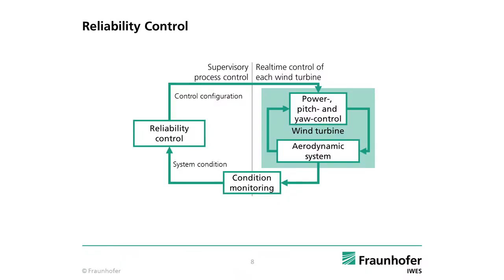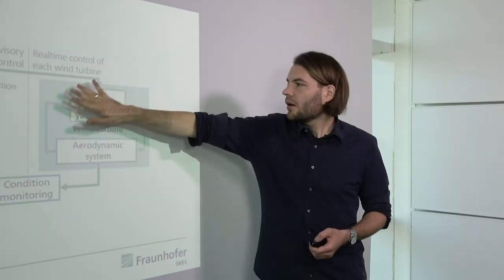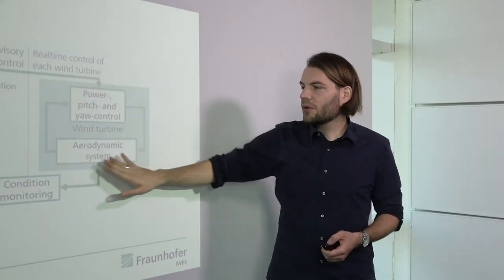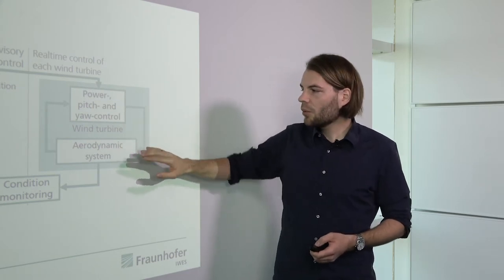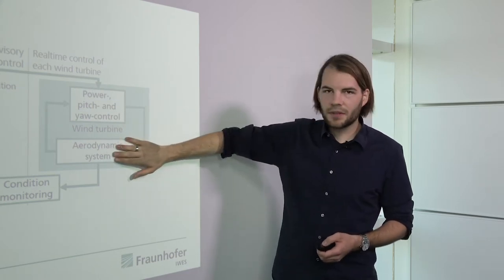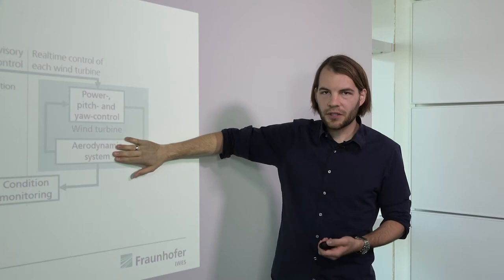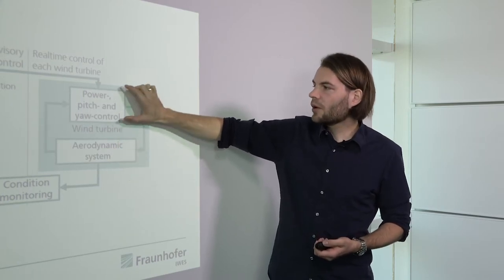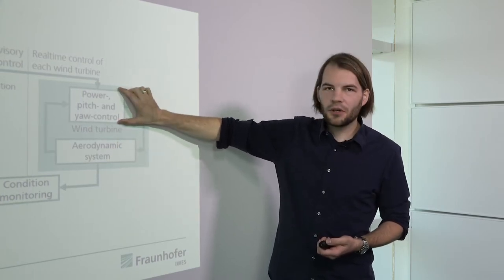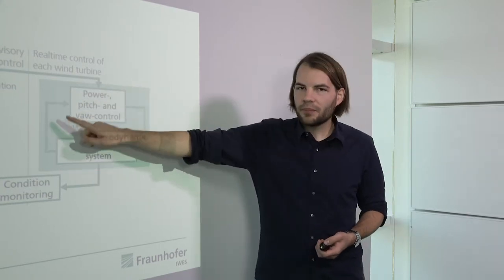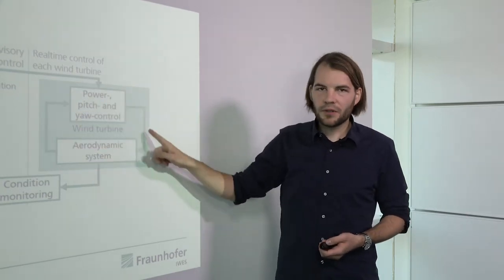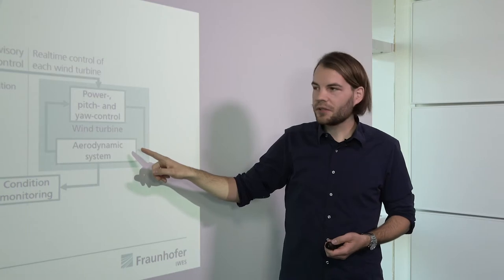We do this by means of a controller running on a very top level of the turbine. On this level we have the normal controllers embedded in each turbine: the aerodynamic system, the drivetrain, the generator, the grid connection, and our power, pitch, and yaw controllers that operate the turbine. These are running in real time on a very small time step and they are safety critical.